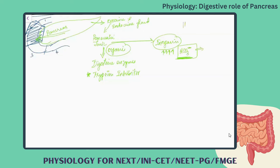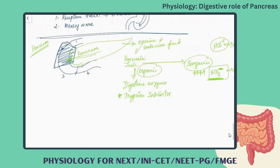In the case of HCl in the stomach, the pH is highly acidic. The bicarbonate-rich pancreatic juice, by contrast, will be highly alkaline.